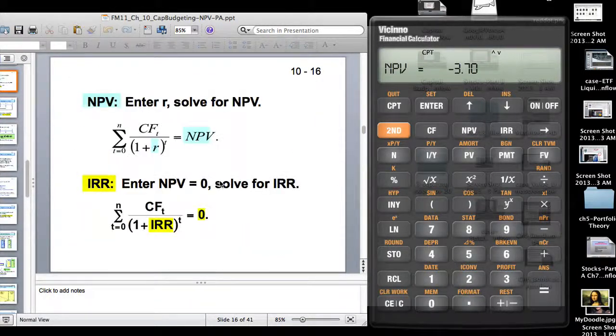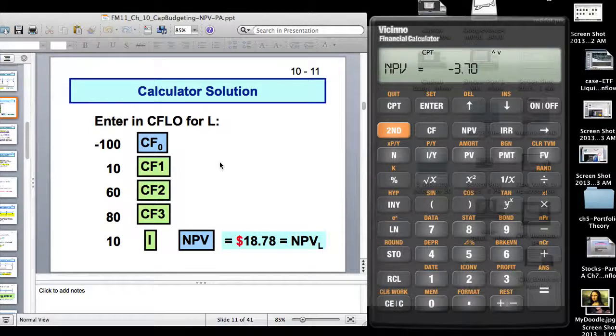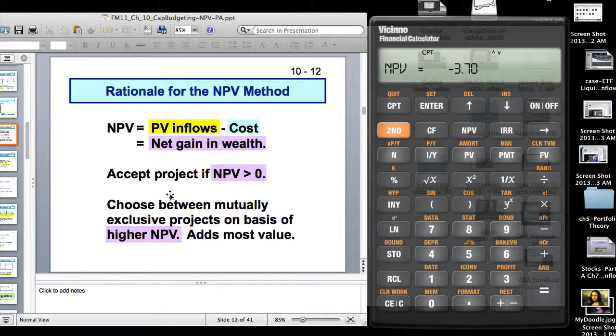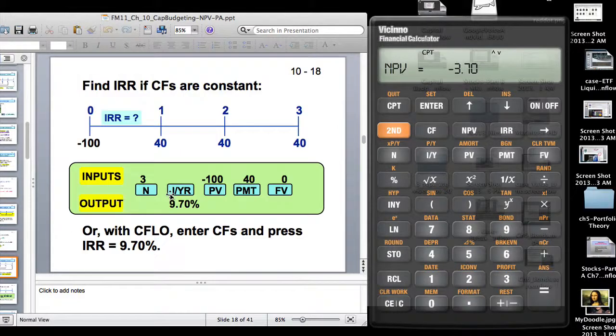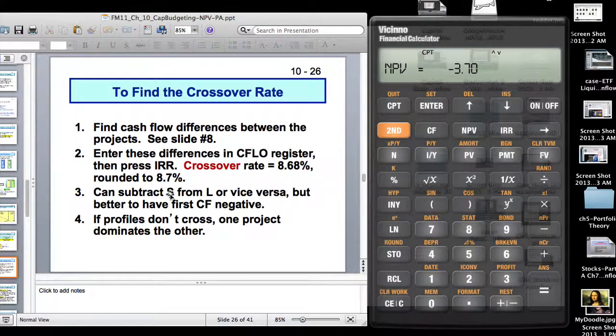Basically think of it. You have project S and project L. You have the cash flows here. So here cash flows 10, 60, 80 and I think the other one was like 70, 50 and 20. So you subtract one from the other. Doesn't matter which one you take. Think of that as an artificial new cash flow stream.